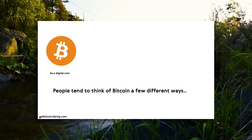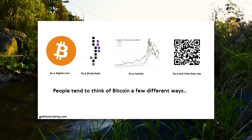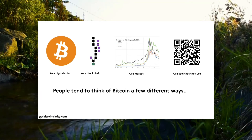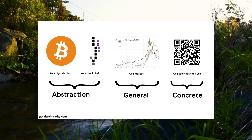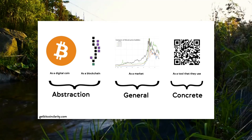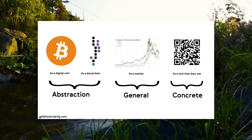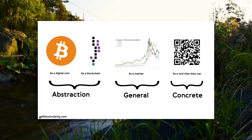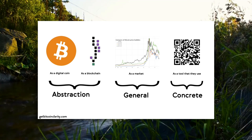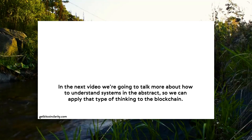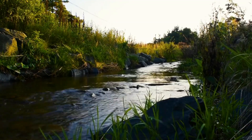People tend to think about Bitcoin in a few different ways: as a digital coin, as a blockchain, as markets, or as a tool like QR codes or addresses. On one end of the spectrum you have abstraction — like the market — and on the other end the most concrete form, like a QR code. As I go through this series, I'll start with high-level abstractions, talk about how the masses generally discuss them, and also explain what they mean at a concrete level, getting as concrete as still valuable. In the next video, we'll talk more about how to understand systems in the abstract, and apply that thinking to the blockchain.